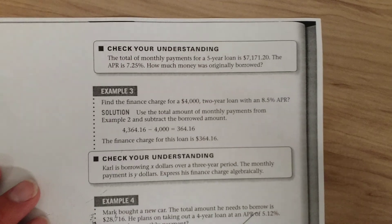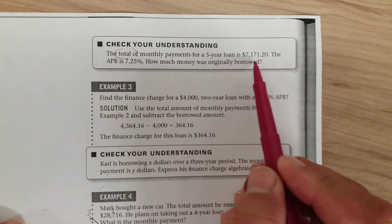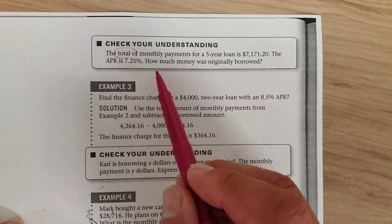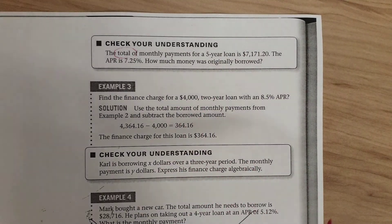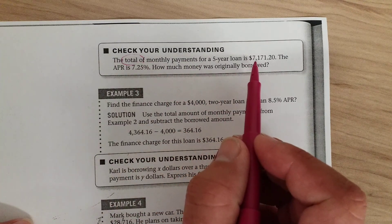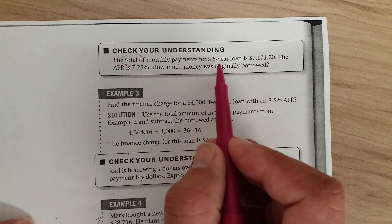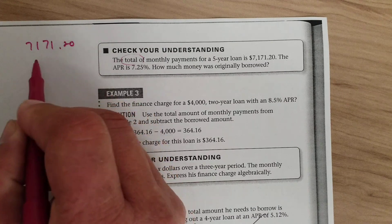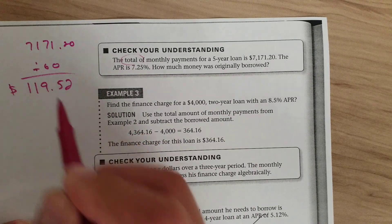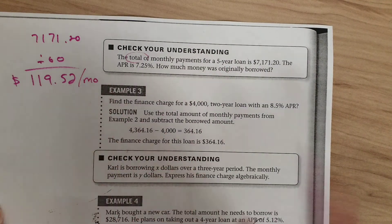Here's a tougher one. The total of all monthly payments for a five-year loan is $7,171.20, and the APR is 7.25%. How much money was originally borrowed? First, find the monthly payment. Five years times 12 months is 60 payments. So $7,171.20 divided by 60 equals $119.52 per month.